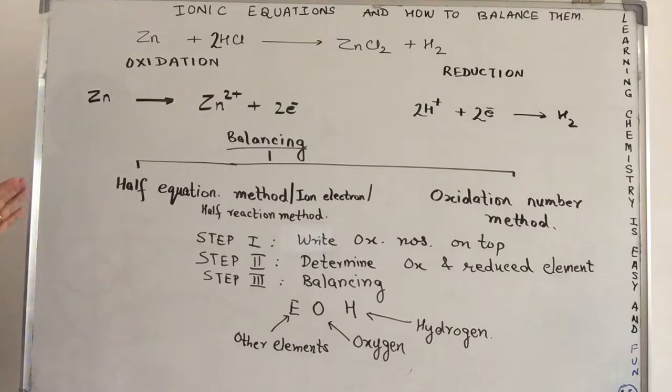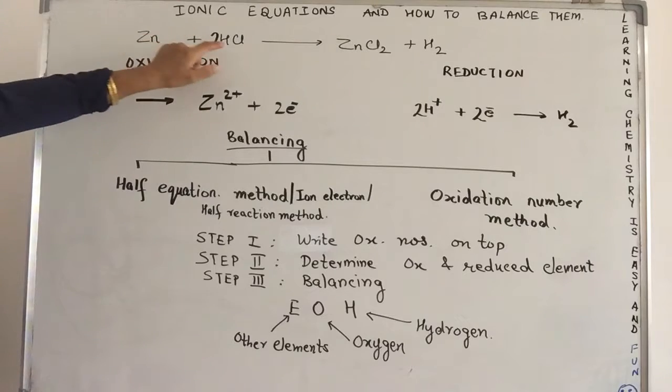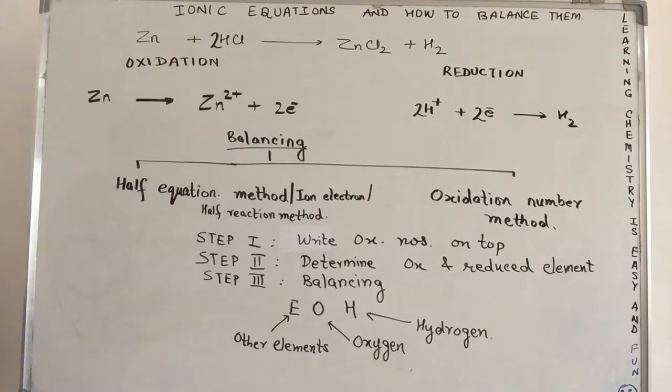In fact, this method can be used to balance any molecular equation also and we will have two additional steps in that. That's all. So, I am taking a very simple equation over here. Zn plus HCl gives you ZnCl2 plus hydrogen.